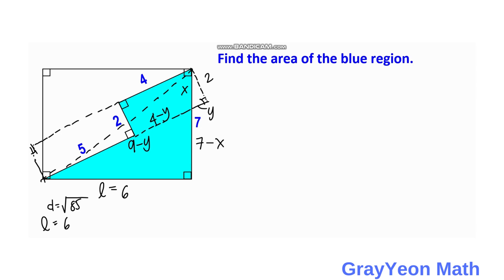We notice that this angle is congruent, and therefore these two right triangles are actually similar, because they have three angles that are congruent — the 90° angle, this angle by the vertical angle theorem, and this third angle which must also be equal.